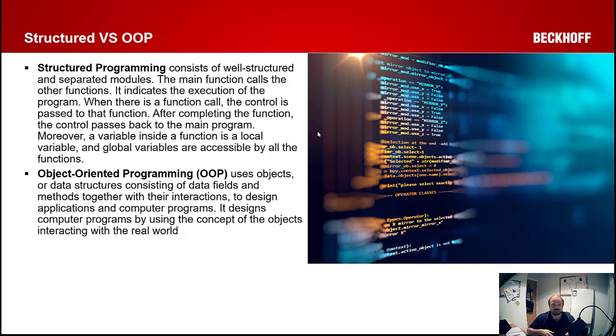Object-oriented programming doesn't think about the world in that process-structured way. It thinks about it as objects, so exactly how we would think about the real world. It uses objects and data structures bonded together and uses the interactions between them to effectively program a machine. It designs computer programs by using the concept of objects interacting with the real world. For example, an object would be an axis, or a button, or a seam crimp, or a lift, or a heater.